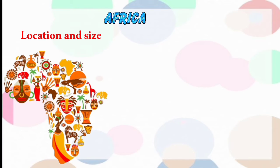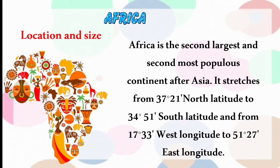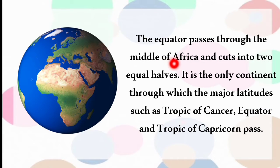Africa is the second largest and second most populous continent after Asia. It stretches from 37°21' north latitude to 34°51' south latitude and from 17°33' west longitude to 51°27' east longitude. The equator passes through the middle of Africa, cutting the continent into two equal halves. It is the only continent through which the three major latitudes - Tropic of Cancer, Equator and Tropic of Capricorn - pass.